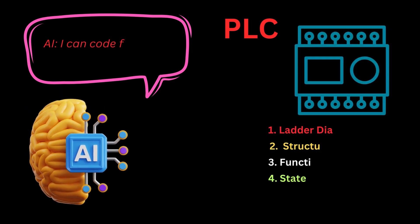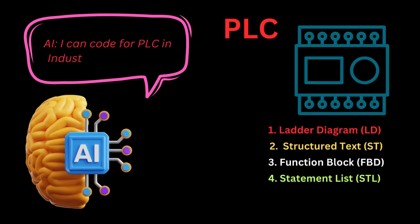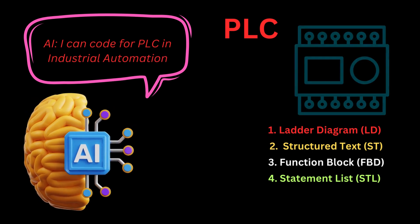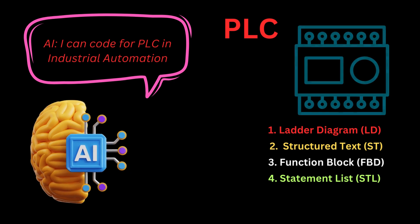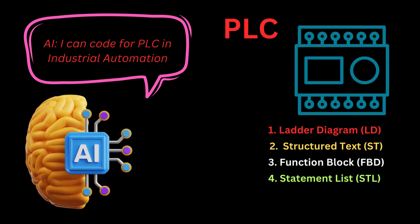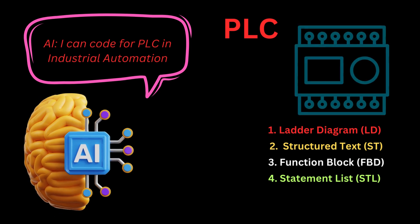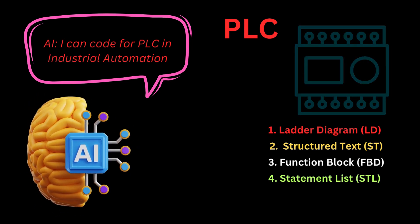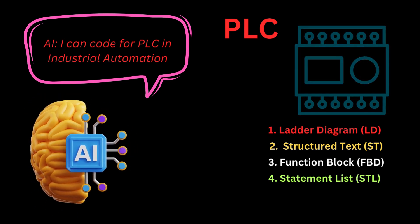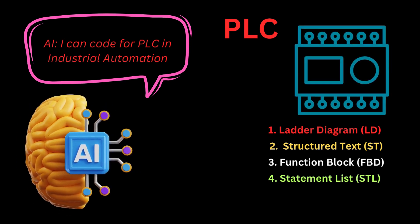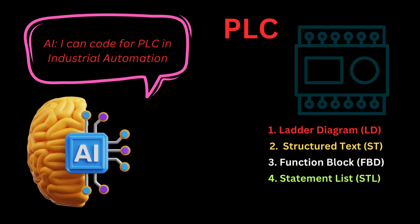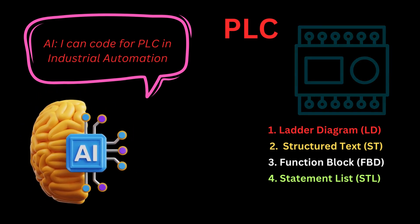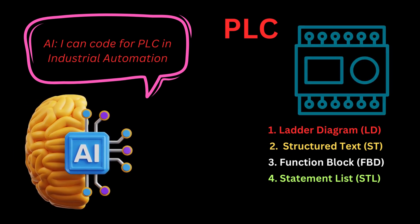Revolutionizing Industrial Automation: AI Replacing Traditional PLC Programming. In this groundbreaking video, explore the future of industrial automation as we delve into the realm of artificial intelligence replacing conventional PLC programming methods. Witness the power of ChatGPT as it seamlessly generates code snippets using the Structured Text (ST) programming language. Discover the efficiency and innovation AI brings to industrial processes, comparing it to traditional manual programming approaches. Join us on this journey towards a smarter, more automated industrial era.